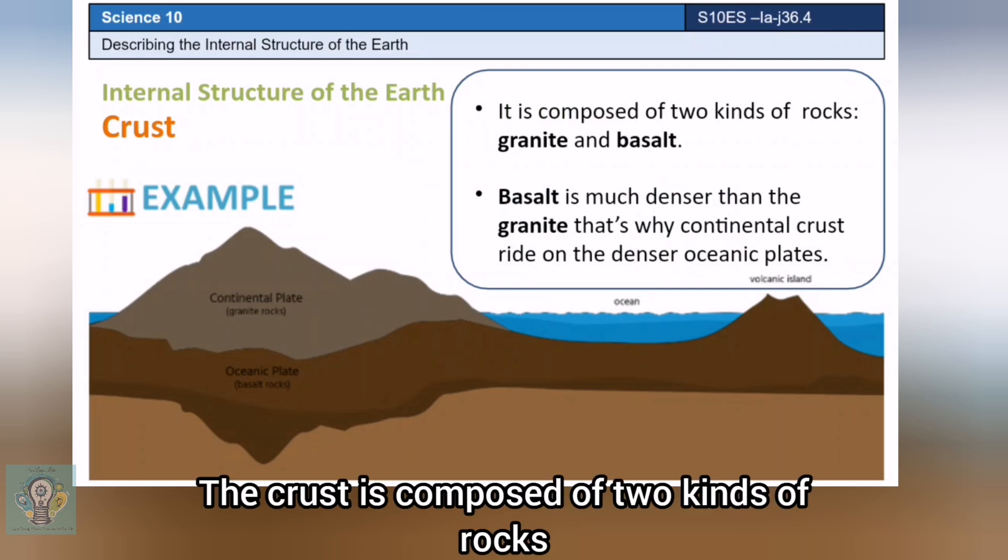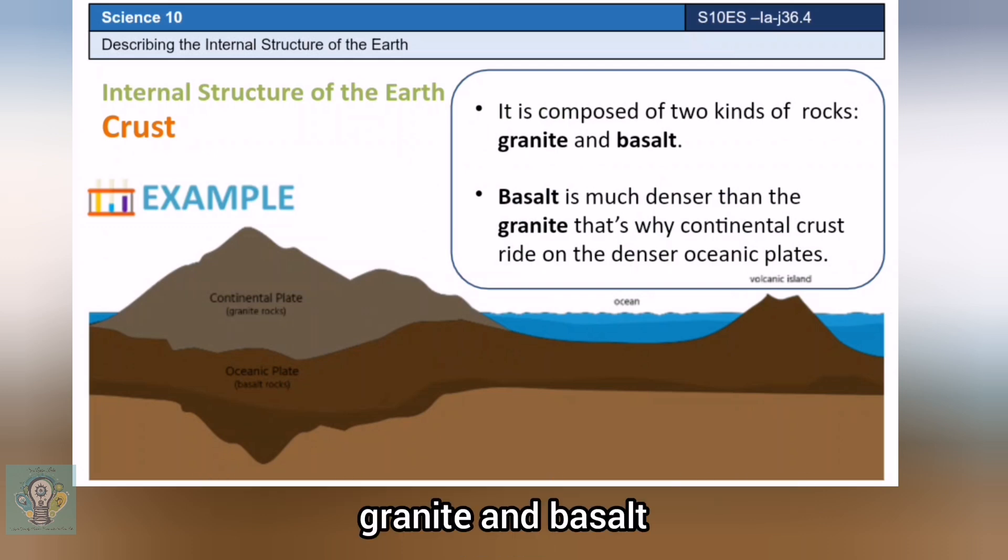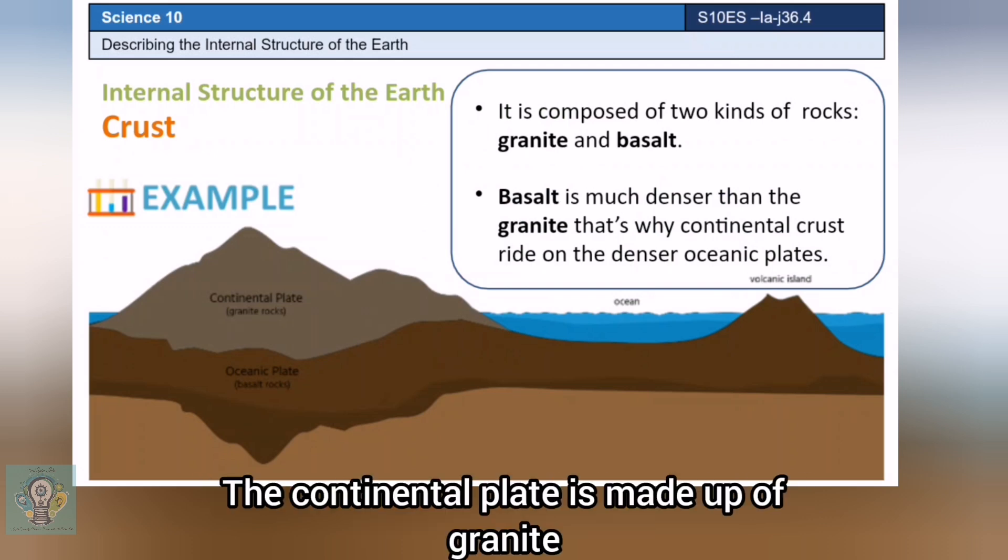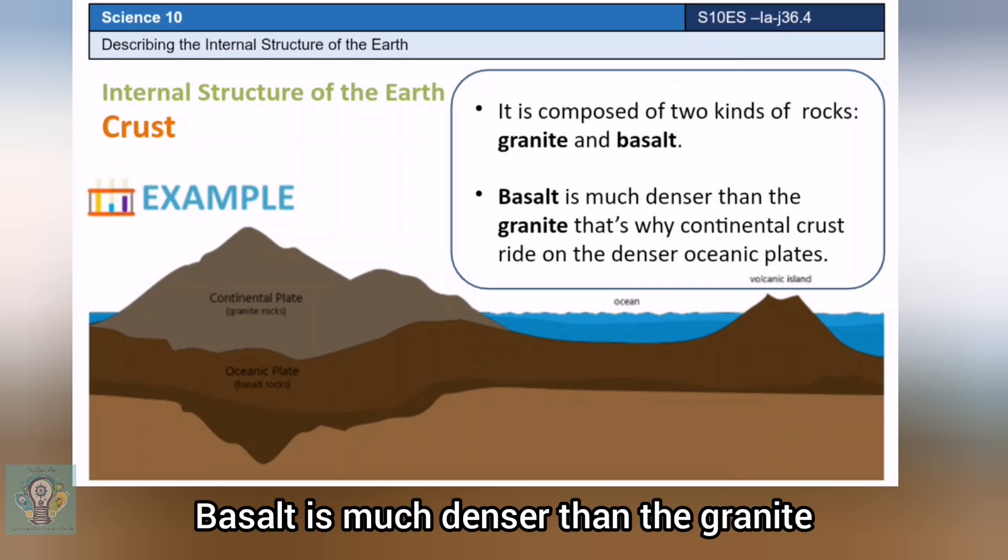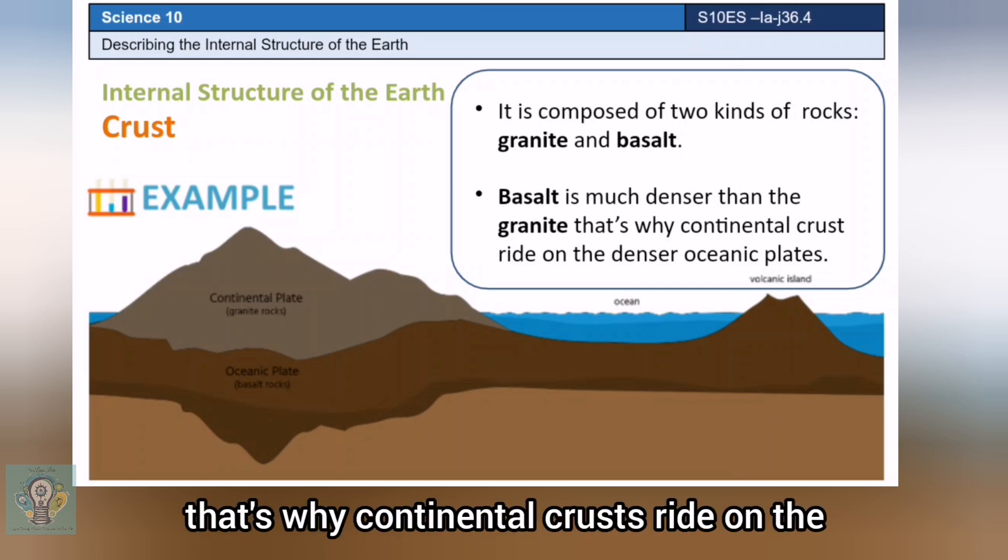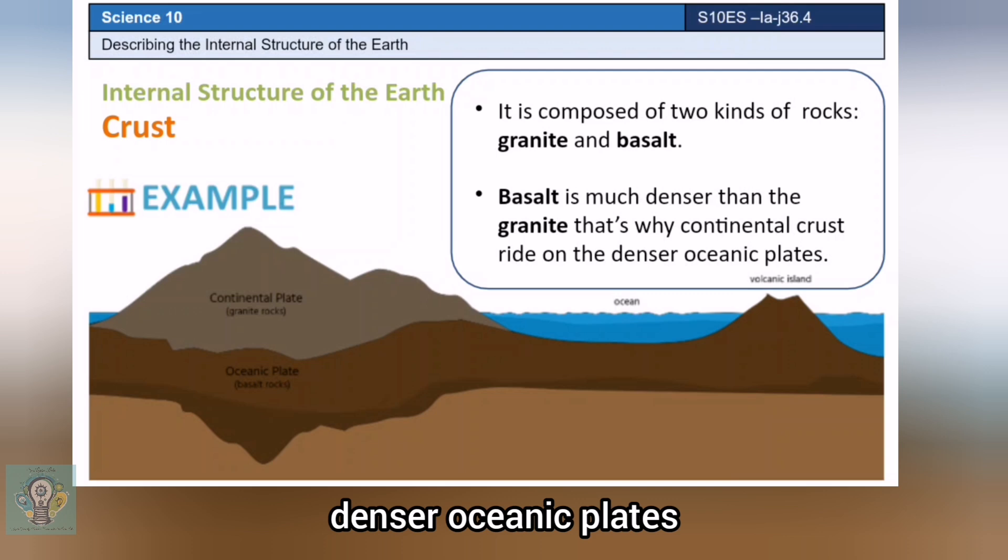The crust is composed of two kinds of rocks: granite and basalt. The continental plate is made up of granite, while the oceanic plate is made up of basalt. Basalt is much denser than granite, that's why continental crusts ride on the denser oceanic plates.